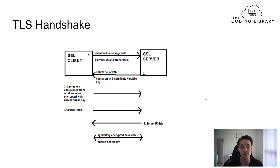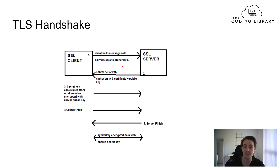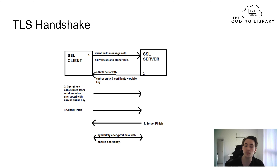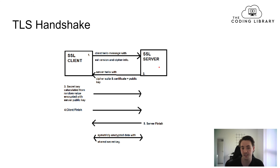Now we're going to talk about the TLS handshake — what happens when we want to do a communication between a client and a server. First, the SSL client sends a hello message to the SSL server with the SSL version and the cipher info it wants to encrypt with. The server then sends back a hello with the cipher suite, a certificate, and a public key, which will be used for encryption. It also sends a certificate for added security.